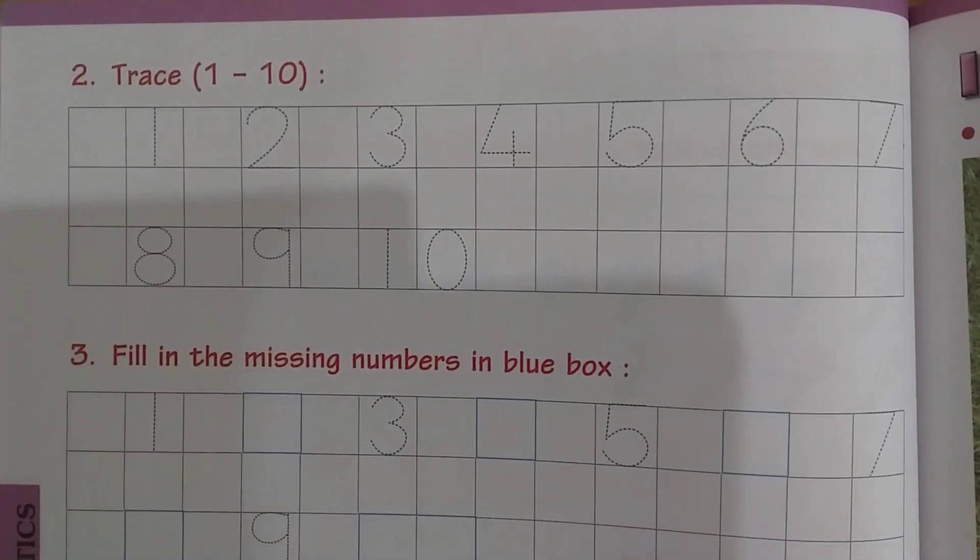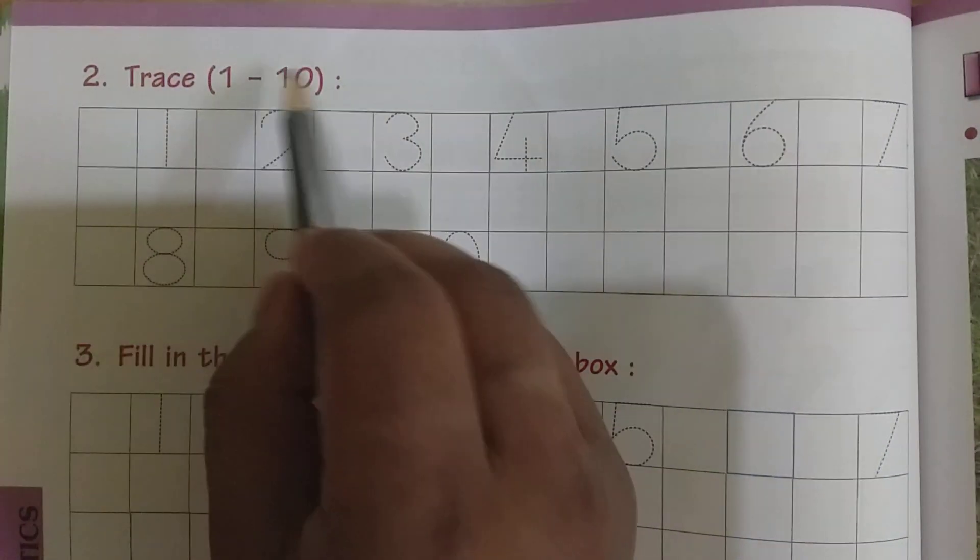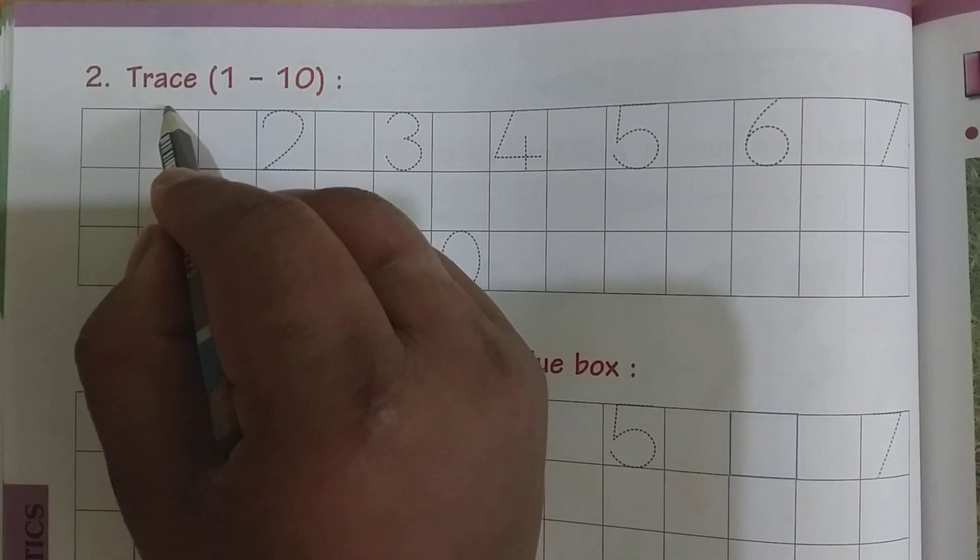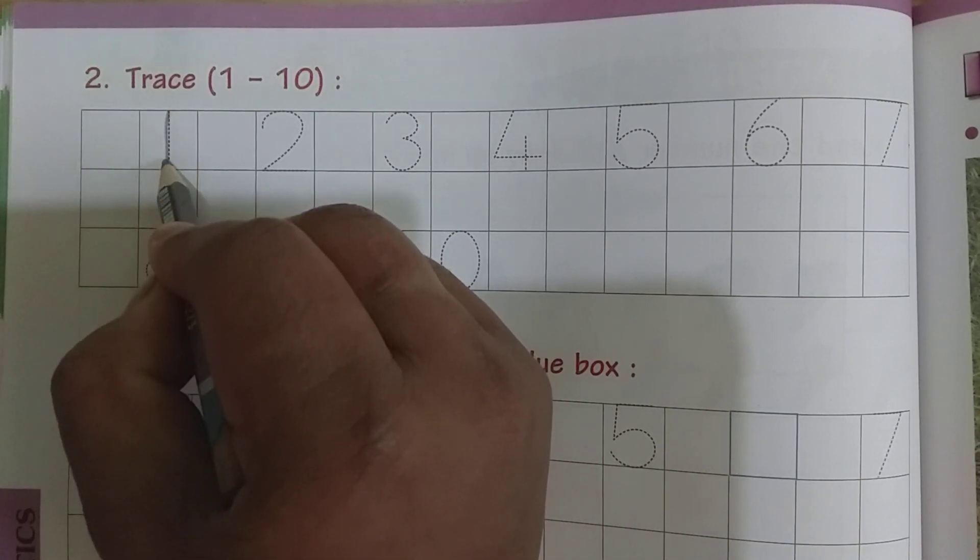Hey kids, today we shall see and trace from 1 to 10. See here, here they have given dogs, no children. Here like this, you should trace.